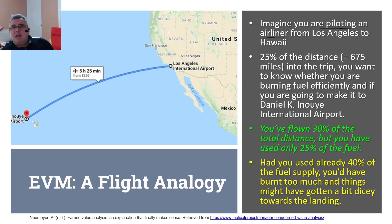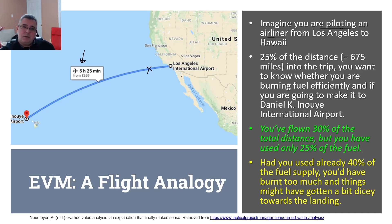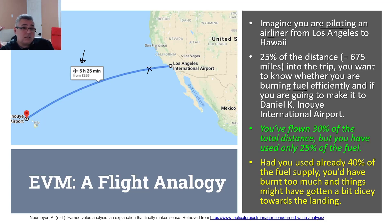Imagine you are flying from Los Angeles to Hawaii. That flight takes five hours and 25 minutes — if you're a project manager, that is the project duration. You start moving, you leave Los Angeles, and you've covered about 25 percent of the distance. When the plane starts flying, it begins burning fuel, and you always have to check how much fuel you've used and how much is left to make sure you'll arrive in Hawaii and not land in the middle of the Pacific Ocean.